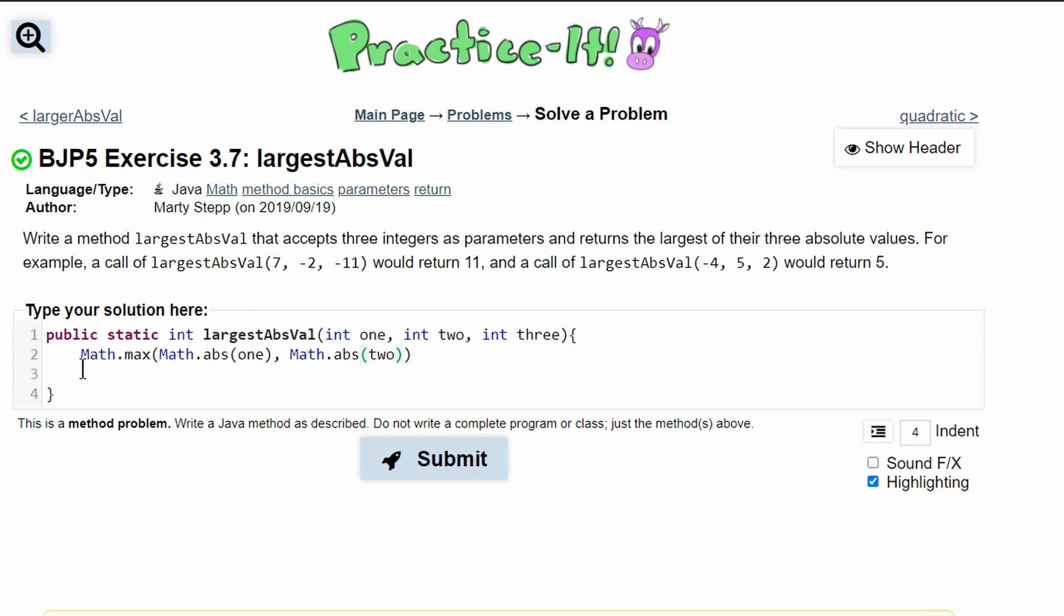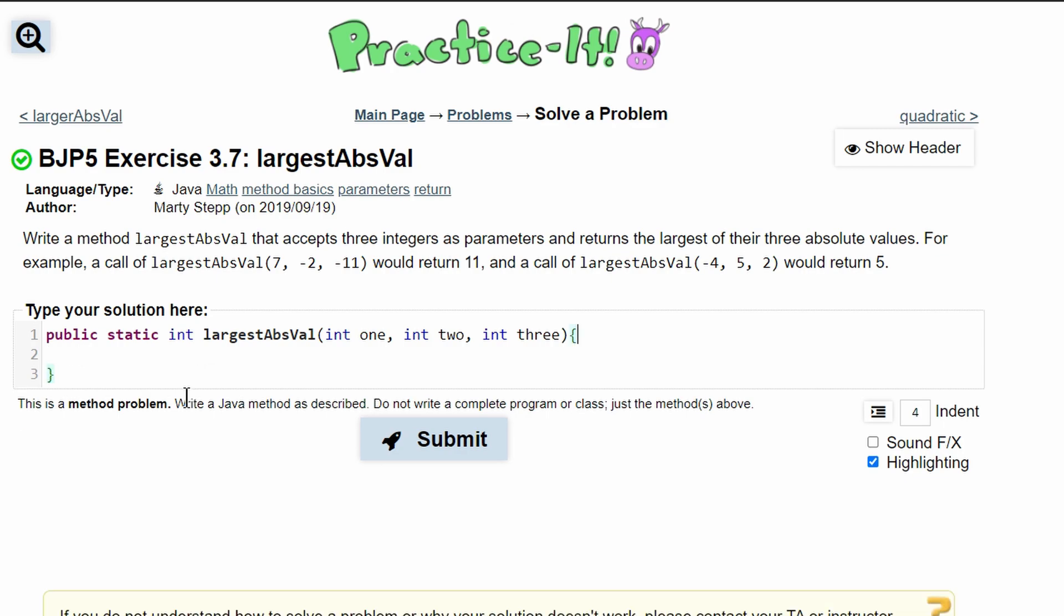In here, we can then cut this and paste it in our return statement. We'll have Math.max, and the first value we're going to compare is this, whatever we get from here, and then three.